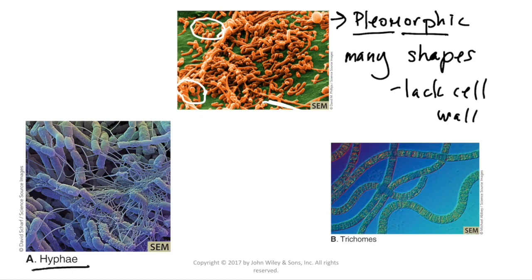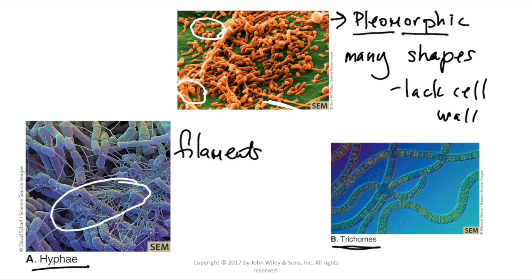Usually these pleomorphic bacteria lack a cell wall, so they don't have that structure to provide a consistent shape. Hyphae are another thing bacteria can produce — you can see those hyphae as little filaments; not all bacteria make these, only a few, usually those found in soil. Finally, trichomes are stacked bacteria — individual bacteria stacking up with each other to form a long tube-like filamentous shape.